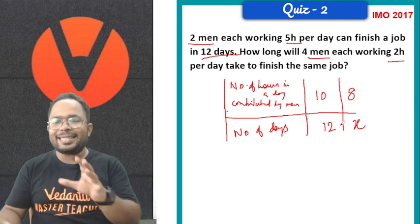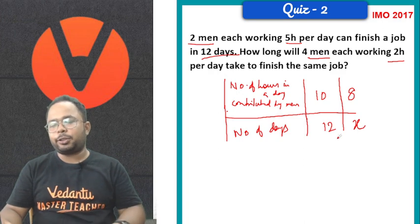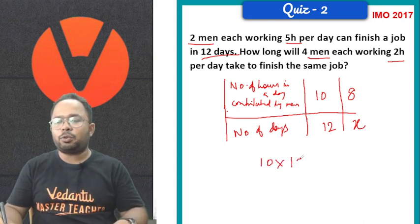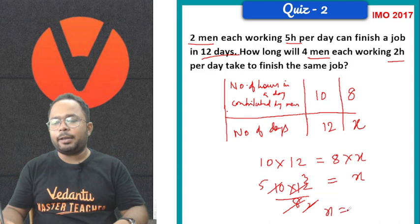Since we can understand this is your inverse relationship. Number of hours being more, number of days will be less. So, what we can do is express it like 10 into 12 is equal to 8 into x. So, x would be 10 into 12 divided by 8. Ultimately, we are getting 15 days.